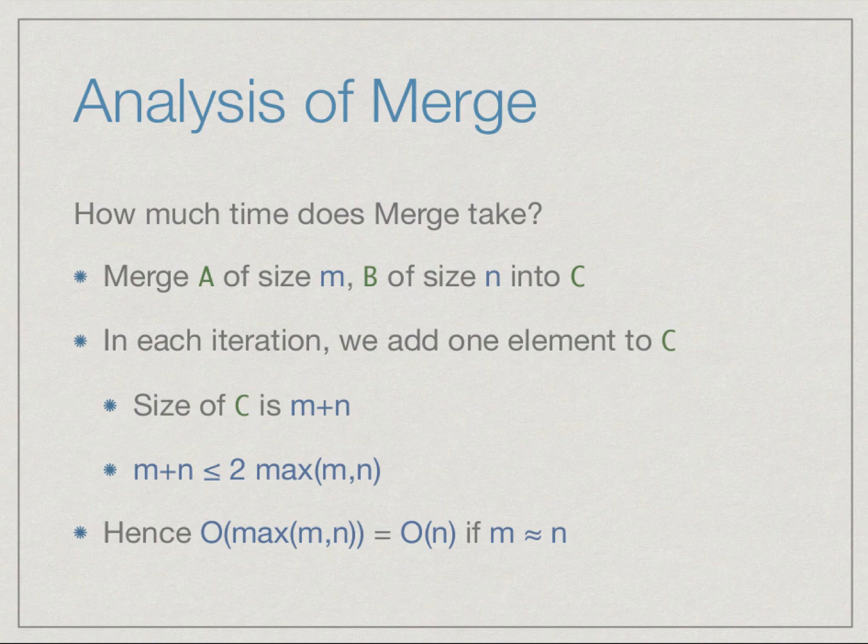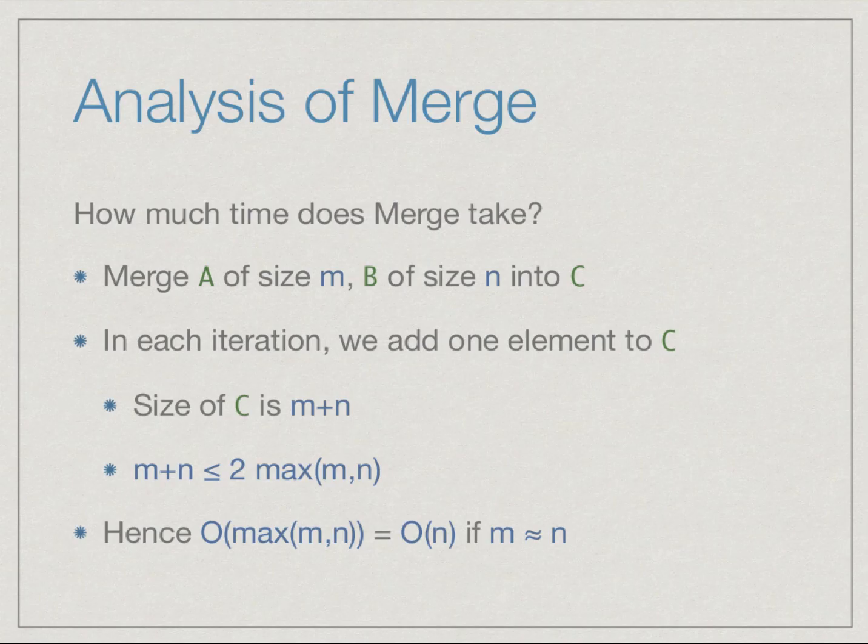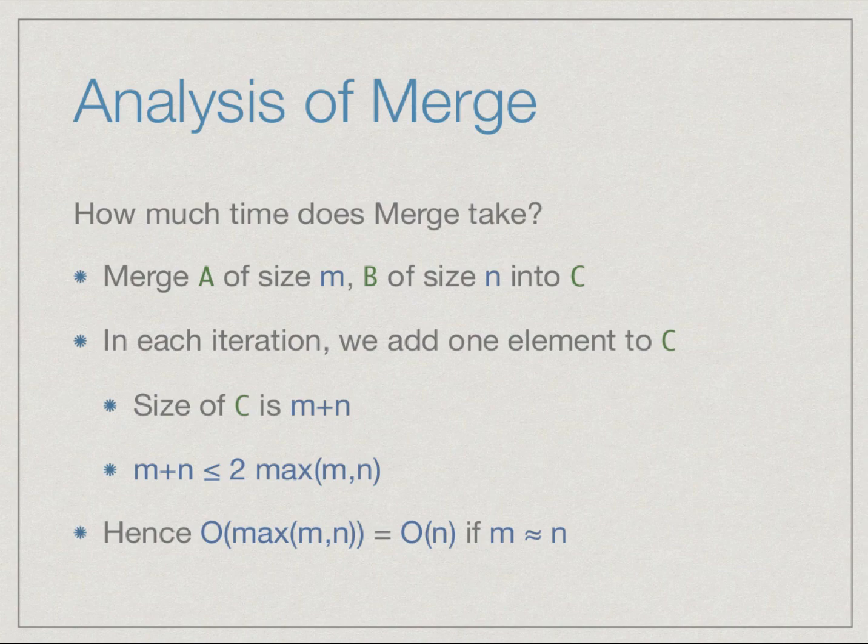How much time does merge take in terms of the input sizes of the two lists A and B? Suppose A has m elements and B has n elements, and we want to put all these elements together into a single sorted list in C. Remember that we had an iteration where in each step we looked at the first element in A and B and moved the smaller of the two to C. So clearly C grows by one element with each iteration, and since we have to move all m plus n elements from A and B to C, the size of C is m plus n.